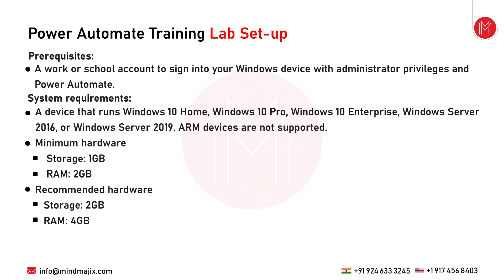To work on Power Automate, we need to set up a lab. Prerequisites include a Gmail account (preferably personal), a Windows device with administrator privileges, at least 2 GB of storage and 4 GB of RAM (minimum 1 GB and 2 GB). You can create a 30-day free trial in Office 365 which provides an E3 license. I'll show how to create this free trial account.